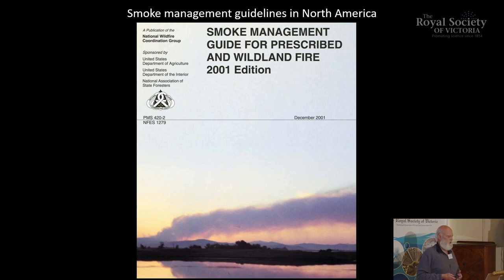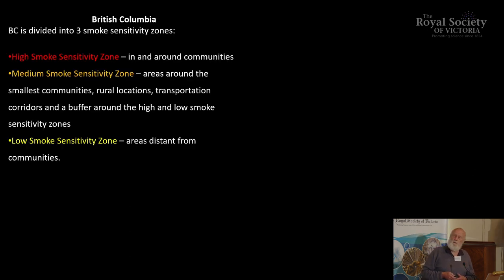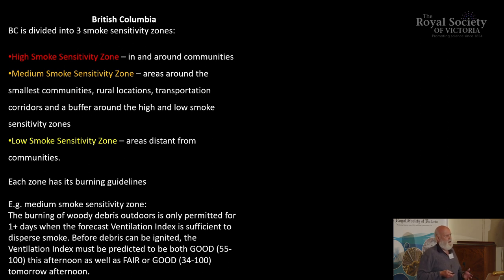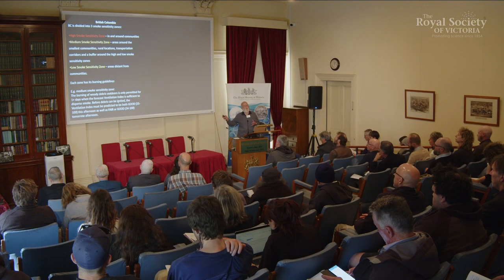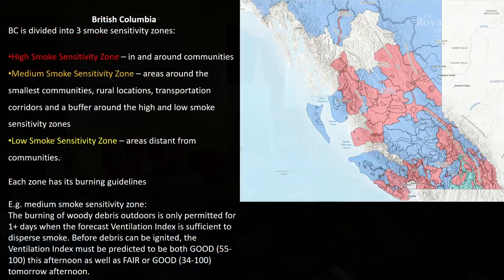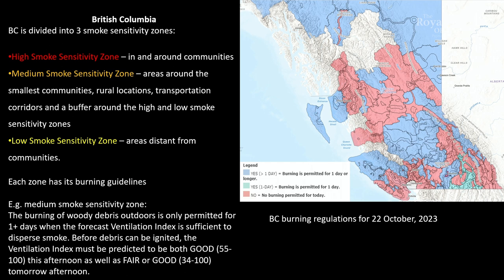So that's smoke — but what happens elsewhere? In 2001, the US put out a 200-plus page document on what to do about smoke and how to manage it, but apparently those 200 pages haven't yet hit Australia. In BC, which I'm familiar with, there are three different zones: basically close to communities, away from communities, and a long way away. Each zone has rules about when you can't burn and when you should burn, depending on how well the smoke will be dispersed, using something called the ventilation index, which is also measured in Australia.